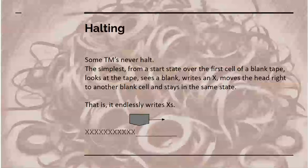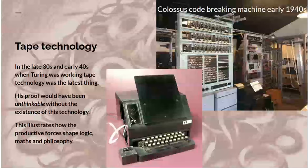Some Turing machines are designed never to halt. The simplest starts from a blank state and if it sees a blank, it writes an X and moves to the right. It repeats that in the same state, so it endlessly writes X's and never halts. But this property of endless looping is a general property inherited by subsequent generations of computing machines. At the time Turing was working in the 30s and 40s, tape technology was the latest thing. His proof of undecidability would have been literally unthinkable unless that technology had existed.